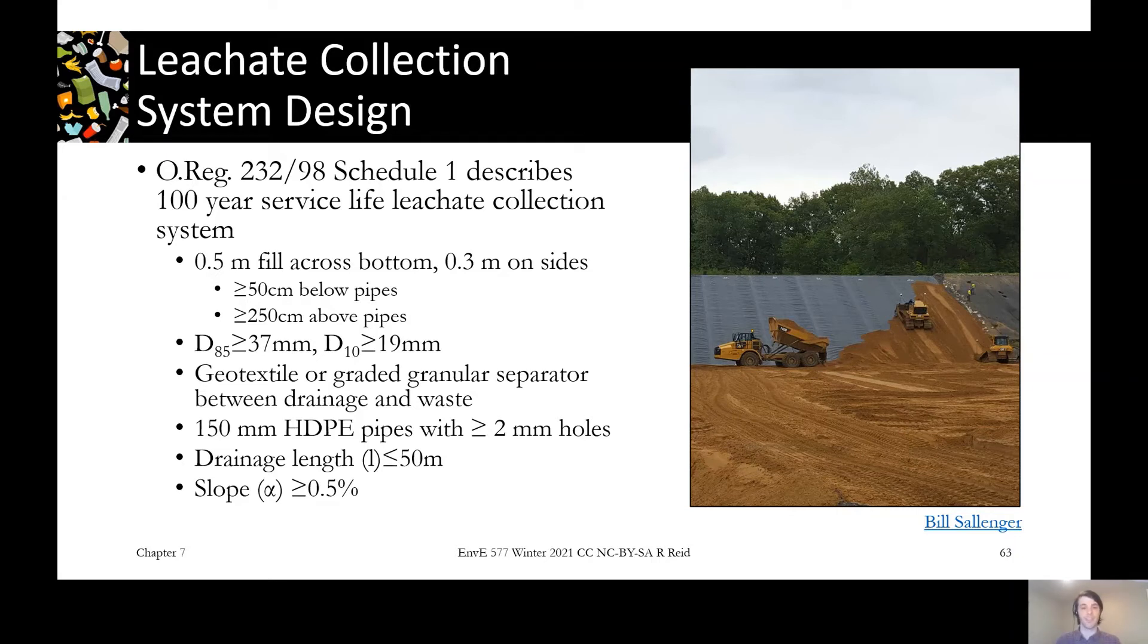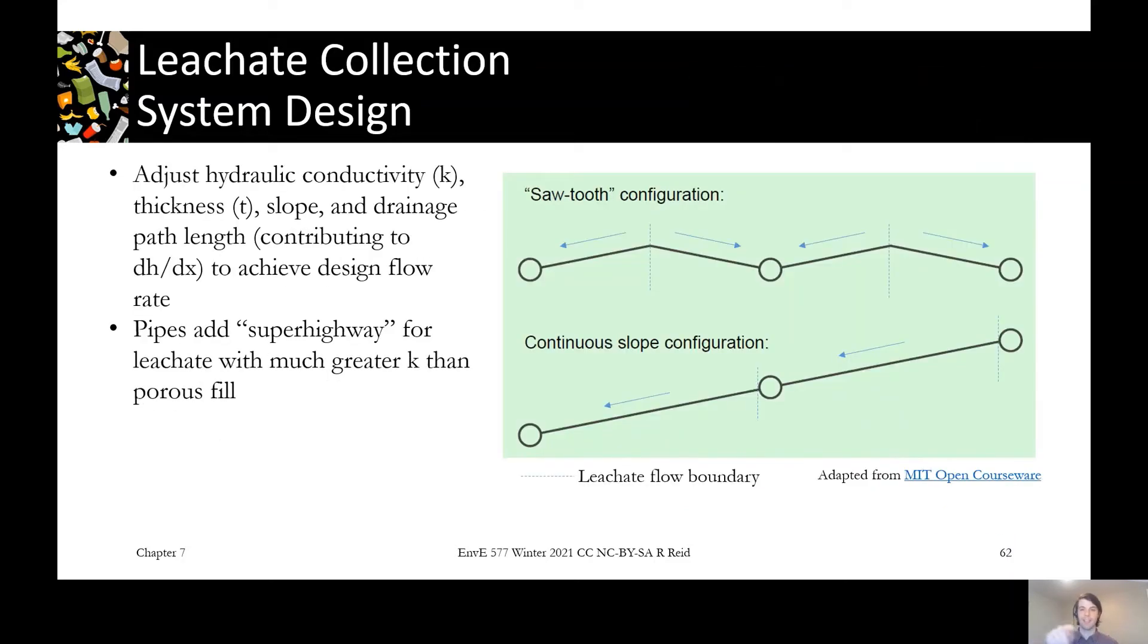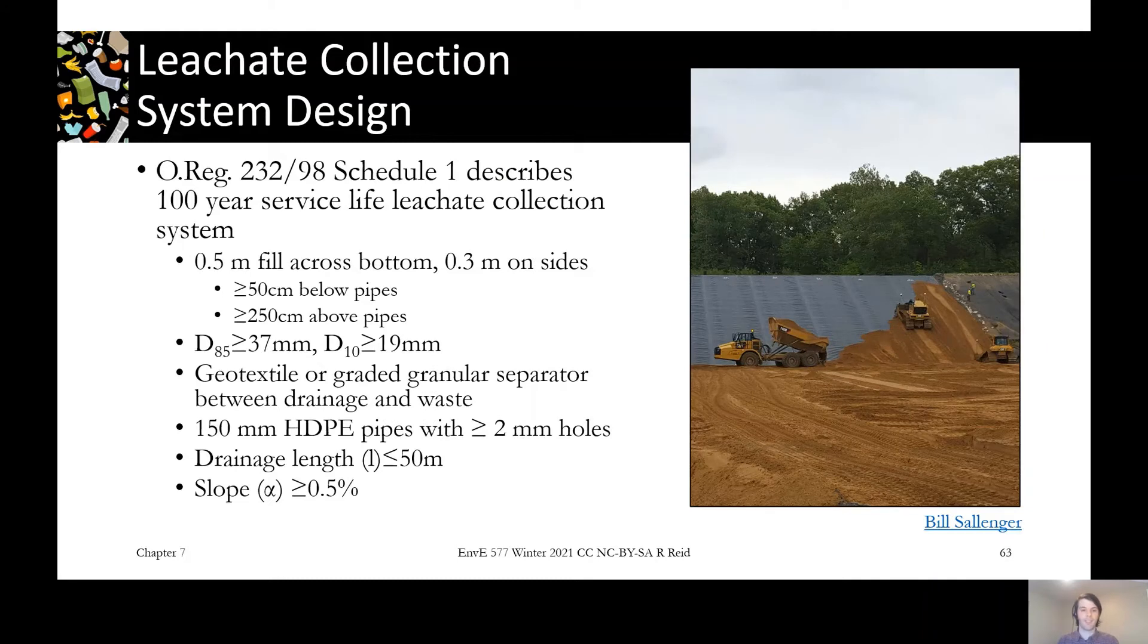It's also specified that the drainage length should be less than 50 meters. That's the length that any one droplet of water would have to travel to get into a pipe. The longer that distance, the harder it is to make its way out. There's also a spec for the slope, just a small slope specified in this regulation that helps add that gradient that will move the leachate out.